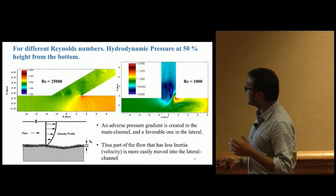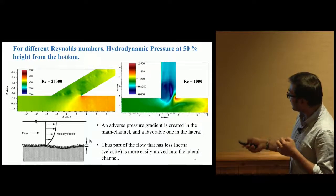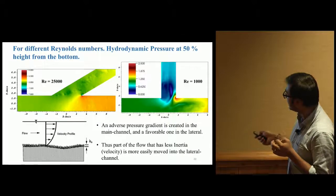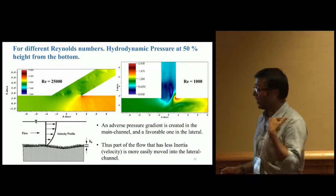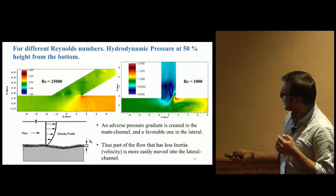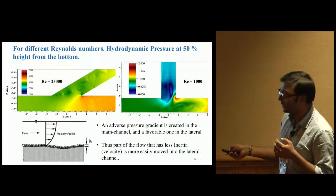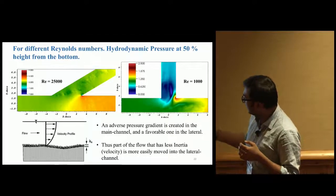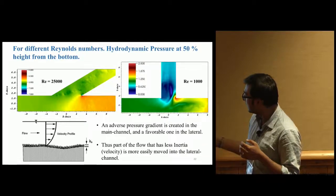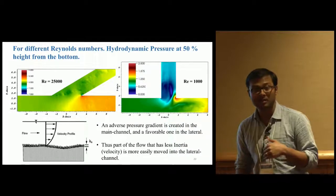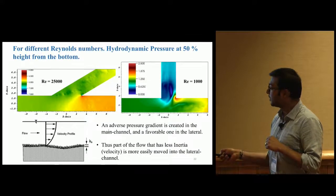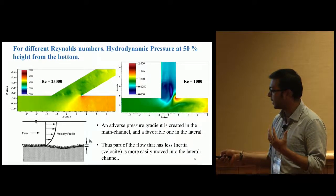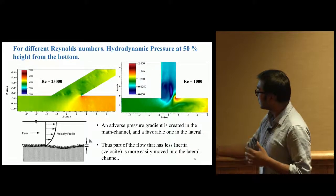What's causing flow near the bottom to enter the side channel? I think it's the hydrodynamic pressure. In the main channel, an adverse pressure gradient is created. In the lateral channel, there's a favorable pressure gradient. In open channel flow, flow near the bottom is slower than near the top. When flow approaches the diversion with favorable gradient toward lateral channel and adverse gradient in main channel, flow must overcome the adverse gradient using higher velocity from the top. Because velocity is lower at the bottom, all flow into the lateral channel comes from the bottom.